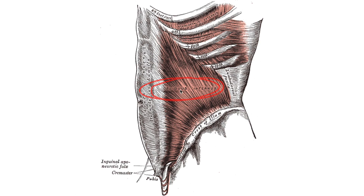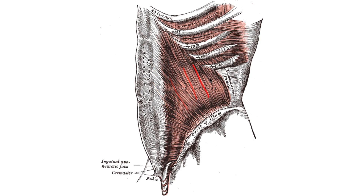The internal obliques are right underneath the external obliques, and their muscle fibers run perpendicular to the external obliques. The external obliques run in one direction, and the internal obliques run in the opposite direction, towards the midline of the body. So the internal obliques are right underneath the external obliques.